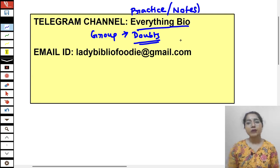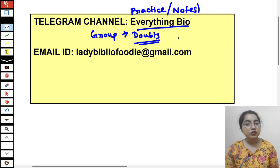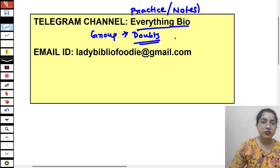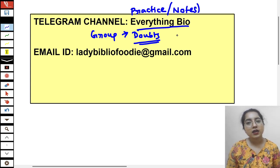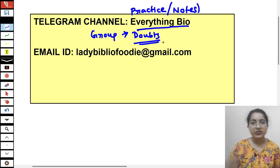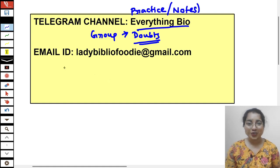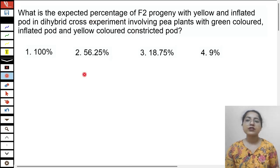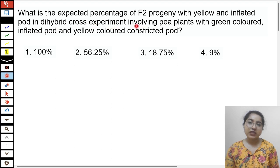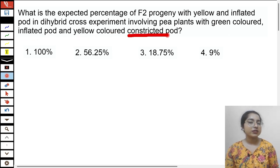There are questions, and I have to solve questions. Students need to solve questions. If there are questions or topics that are needed, I have to provide them. This will be updated in the channel, and this video will be uploaded. You can also contact me via LadyBioFoodie — my email ID. So let's see the question: What is the expected percentage of F2 progeny with yellow inflated pod in a dihybrid cross experiment involving a pea plant with green-colored inflated pod and yellow-colored constricted pod?